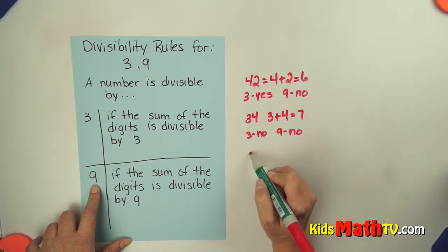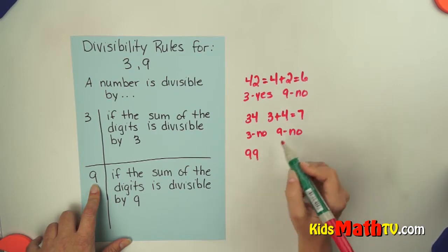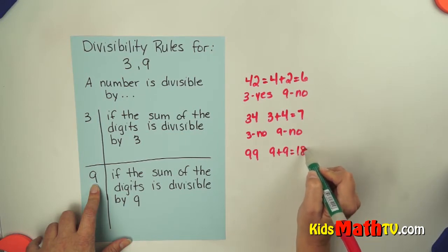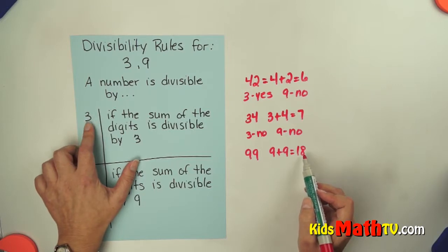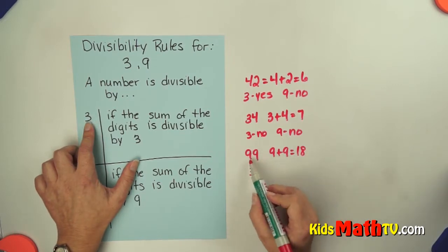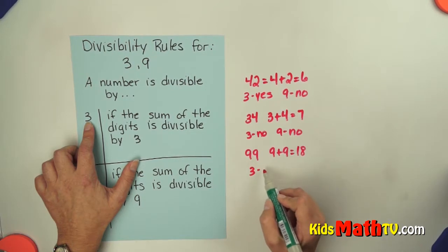How about another one? Let's try 99. If I add 9 plus 9, I get 18. Well, 18 divides by 3 evenly. 18 divided by 3 is 6. So 99, our original number, is divisible by 3.